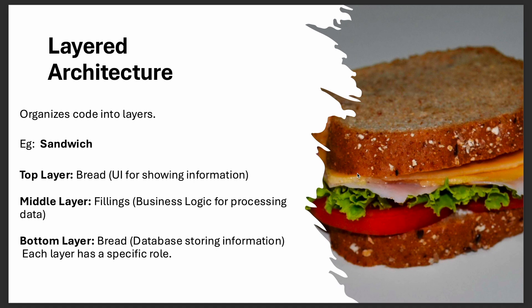Next is layered architecture, which organizes code into layers. Think of a sandwich — it has a top layer, middle layer, and bottom layer. Translating this into software: the top layer is the UI for showing information, the middle layer is the business logic for processing, and the bottom layer is the database for storing information. That is the layered architecture.